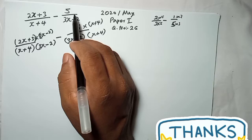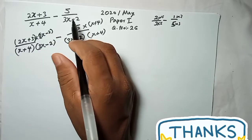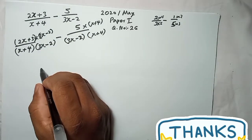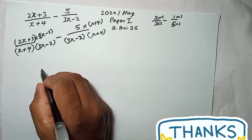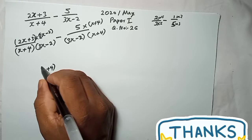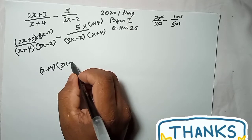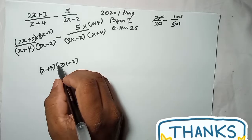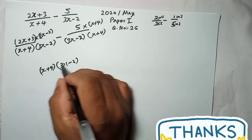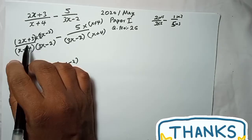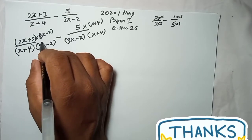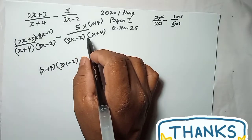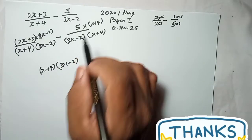After multiplying both numerator and denominator, the denominators become the same: (x+4)(3x-2) on both sides. You don't need to re-expand the denominator — just keep it as (x+4)(3x-2).